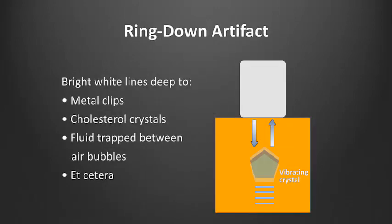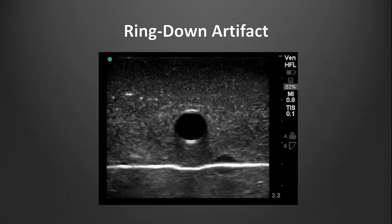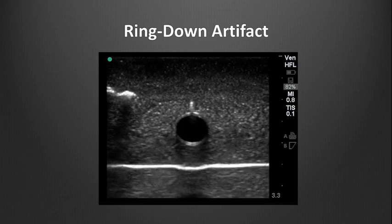Ring-down artifacts appear as bright white echogenic lines extending deep to metal clips, foreign bodies, and certain other tissues. They can be a clue to the point-of-care user searching for a metallic foreign body in soft tissue. Clinically, we most often see ring-down artifact when we place a needle or catheter in a vessel, and it does not appear as a sharp point, but rather a point with a white tail emanating downwards from the metal needle tip, as shown here with the yellow arrows. We can use ring-down artifacts to follow our needle tip during IV catheter insertion under ultrasound guidance.